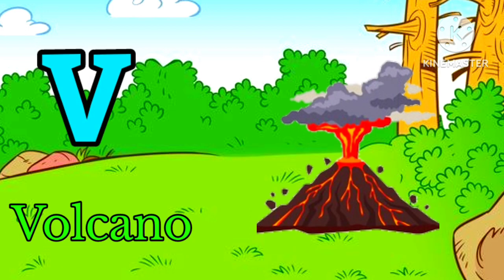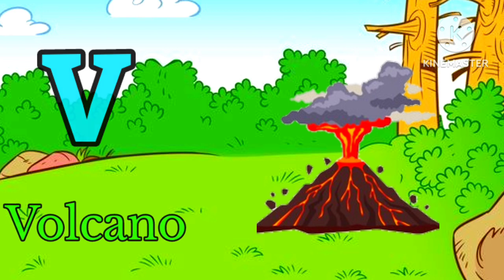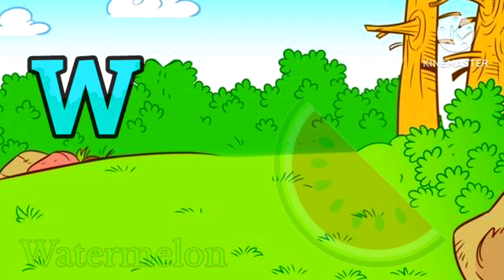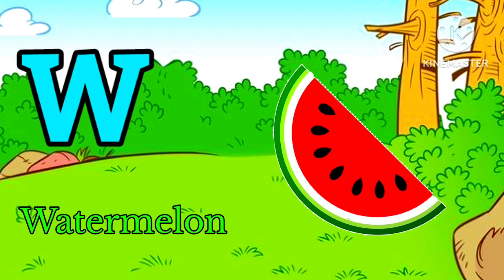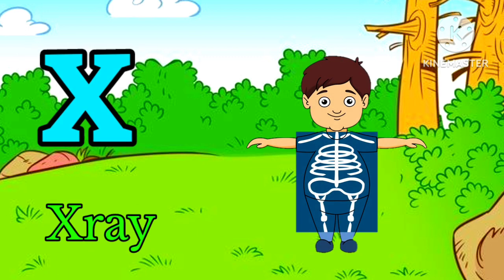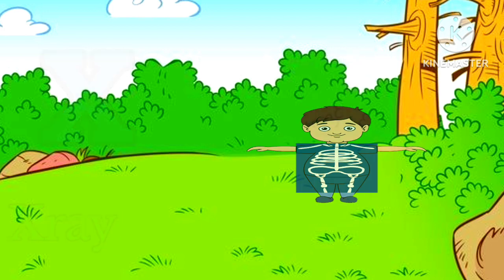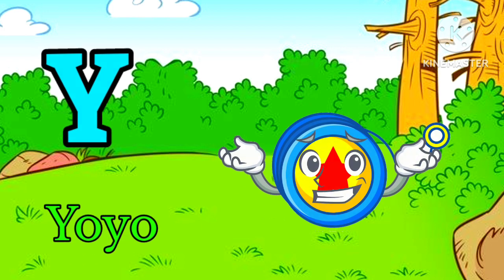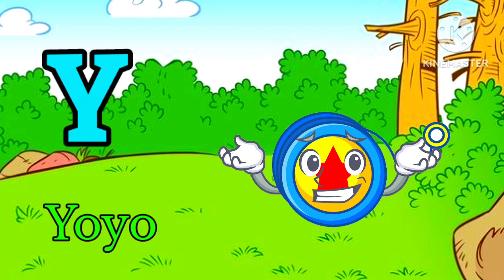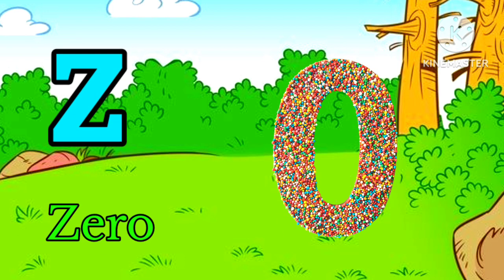P for Papaya. W for Watermelon. X for X-Ray. Y for Yoyo. Z for Zero.